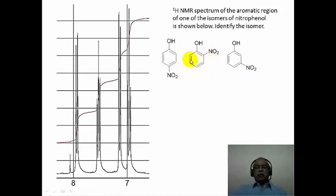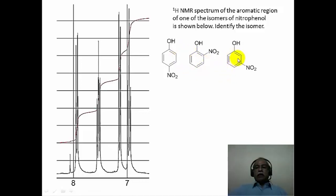In both ortho-nitrophenol and meta-nitrophenol, you have 4 different chemically non-equivalent hydrogens — the hydrogen ortho to the hydroxy, para and meta to the nitro, para to the hydroxy and meta to the nitro, and finally ortho to the nitro. So there is an A, B, C, D kind of spin system in ortho-nitrophenol. Similarly, in meta-nitrophenol, all 4 hydrogens are chemically non-equivalent. Either compound could satisfy the 4 chemical shift values seen in the spectrum.